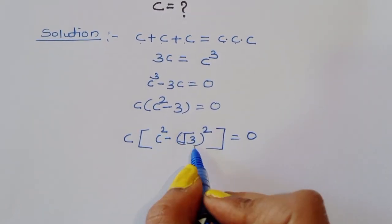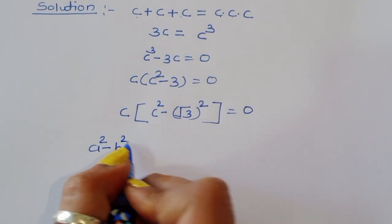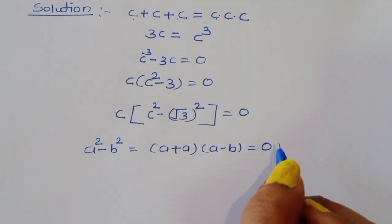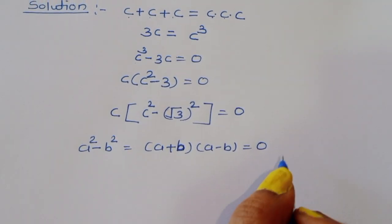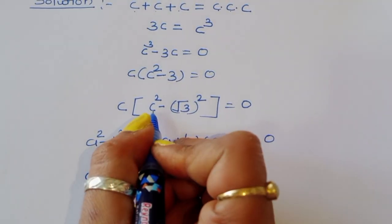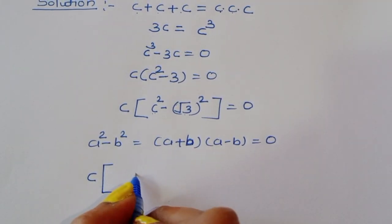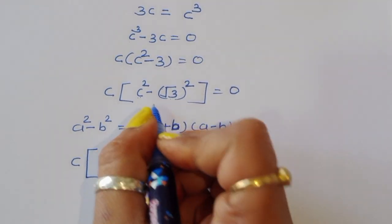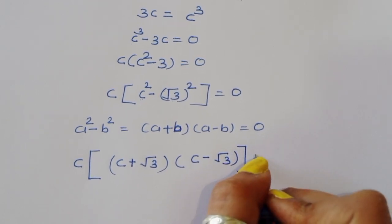You can see this is an a squared minus b squared form. We know the formula: a squared minus b squared equals (a plus b)(a minus b). Applying this formula, where a is c and b is square root of 3, we get c times (c plus square root of 3) times (c minus square root of 3) is equal to 0.